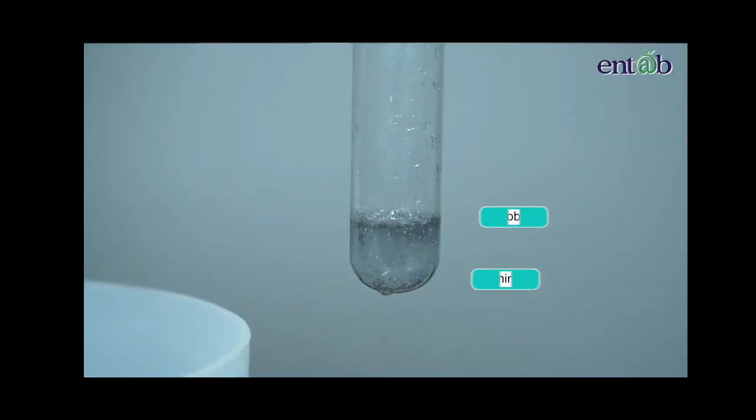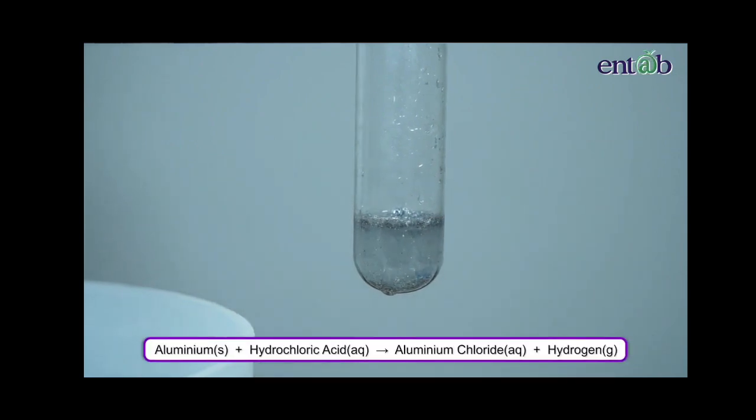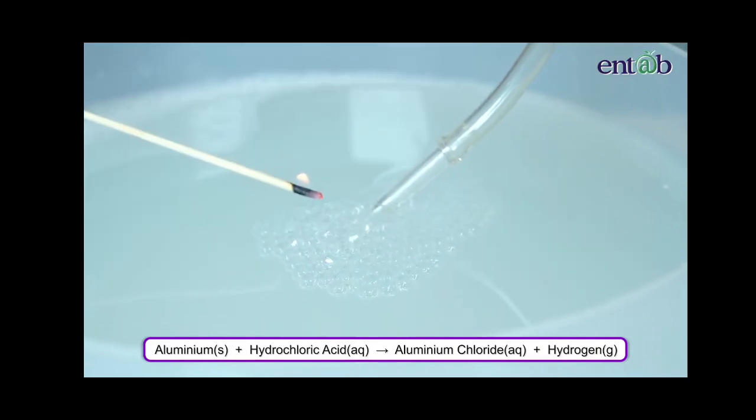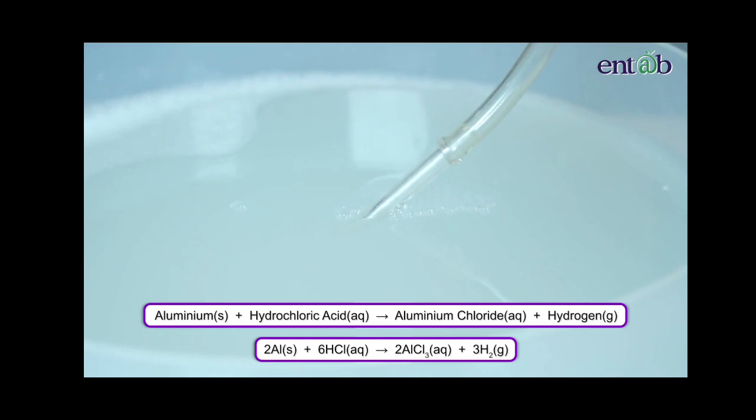Here, the metal used is aluminum. When hydrochloric acid reacts with aluminum, it gives aluminum chloride along with hydrogen gas. The balanced chemical equation can be presented like this.